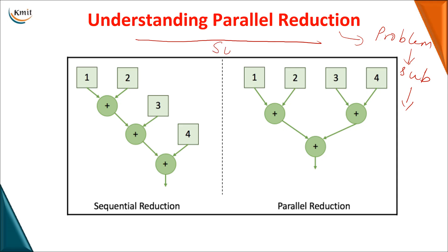In parallel reduction we are taking an example of summation. In sequential reduction you compulsorily require two inputs for your add operation, and once you get the result of the first one you provide the third as input. In parallel, you employ multiple adders and provide inputs to each adder. Out of four elements, the first two are given as input to the first adder and the next two to the next adder. As the number of elements increases, the number of adders also increases.